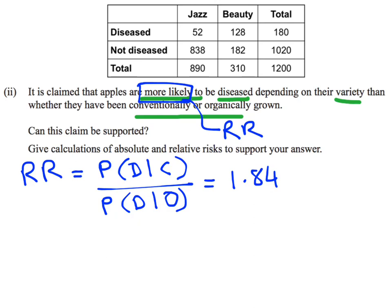So in this particular case, they want us to find the relative risk. And we know that we've got two conditional probabilities, one divided by the other. And we've just got to now work out what the conditional probabilities are. Now this one's talking about apples being more likely to be diseased depending on their variety. So we've got two different varieties: jazz and beauty.